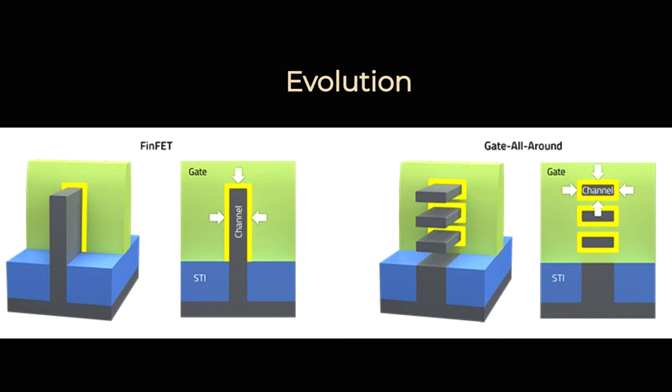This strategy is called GAA. Early GAA transistors will have vertically stacked nanosheets that are surrounding the gate material. This should solve the FinFET channel control issues.